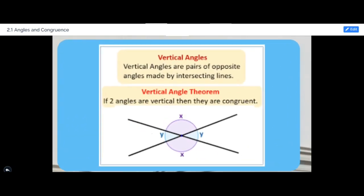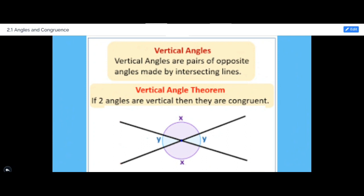The third type of special angle pairs are vertical angles. Vertical angles are two angles that are opposite to each other and they are congruent.